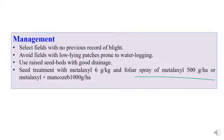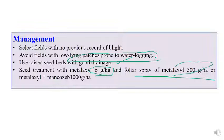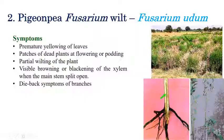For management of Phytophthora blight: select fields with no previous record of blight; avoid fields with low-lying patches prone to waterlogging; use raised beds for good drainage. Seed treatment with metalaxyl at 6 grams per kilogram of seeds and foliar application of metalaxyl at 500 grams per hectare, or metalaxyl plus mancozeb combination at 1 kilogram per hectare, can be recommended.